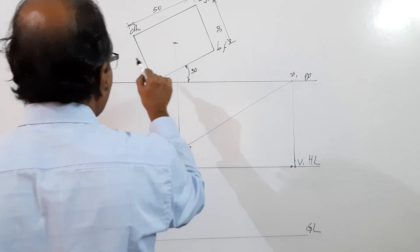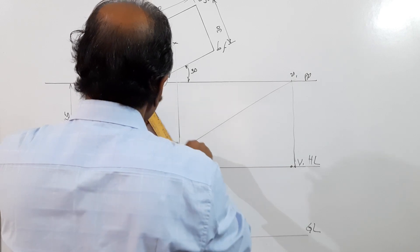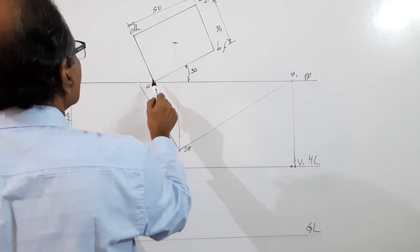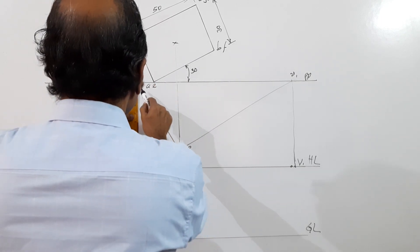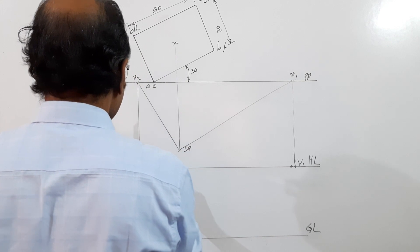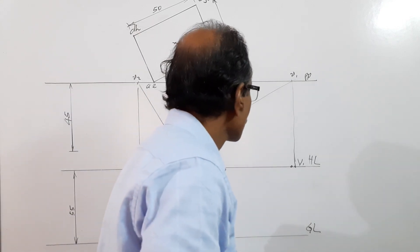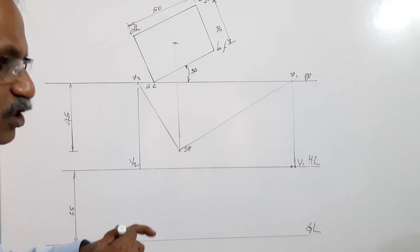So for all those four lines, V1 is the vanishing point. Similarly, I draw a line through SP parallel to AD. I get V2, small v2. Drop it down to HL. I get capital V2, and capital V2 is the vanishing point of AD and all other lines parallel to AD.